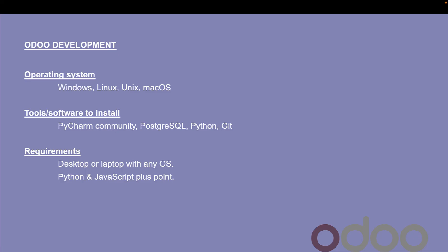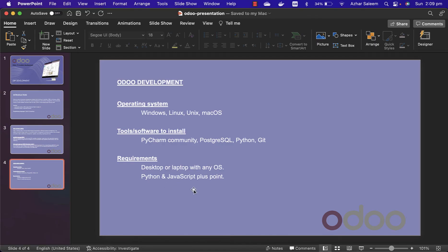The language you need to use is Python, and installing Git is good for managing your repository from GitHub — we'll discuss Git and all these tools in detail in another video. The requirements are a desktop or laptop with any operating system: Windows, Linux, Unix, or Mac OS. Knowing Python or JavaScript is a plus, but otherwise we will learn everything from scratch.